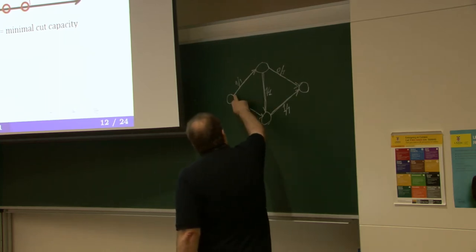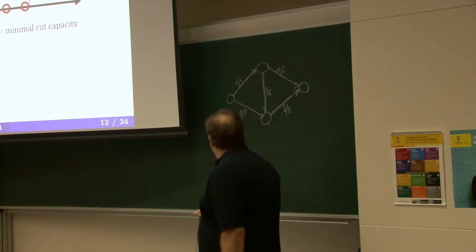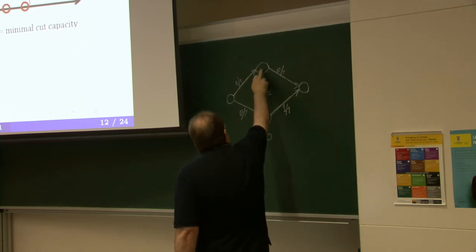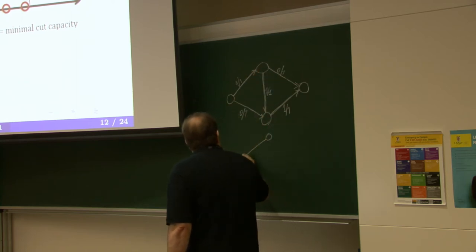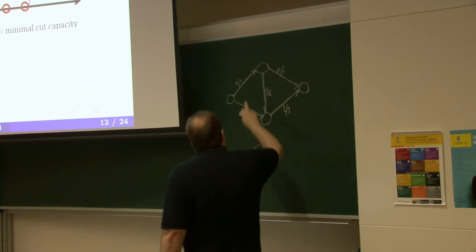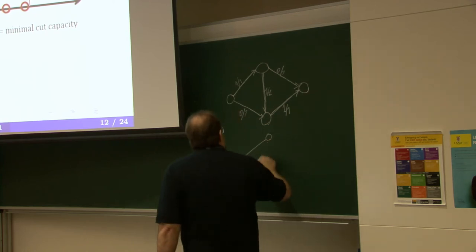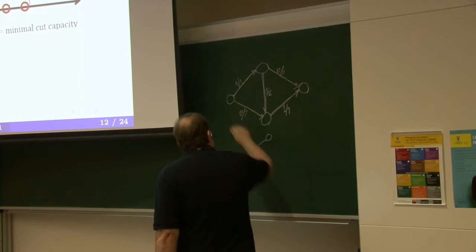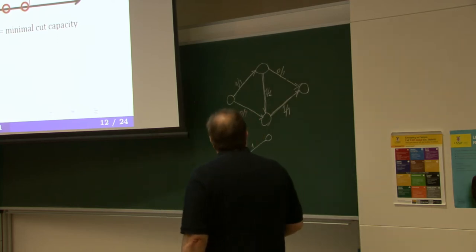What does the residual network flow look like? Because we have 1 out of 1 in this direction, this edge simply disappears. But because we have a flow of 1 in this direction, a virtual pipe appears in the opposite direction, because what you can do is reduce this flow of 1. In this direction, you still have a pipe of capacity 1.